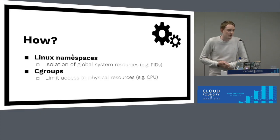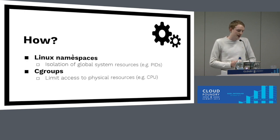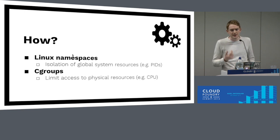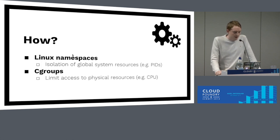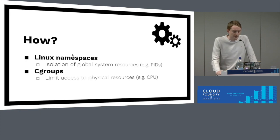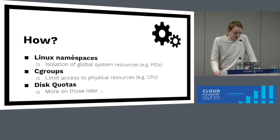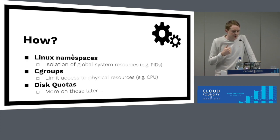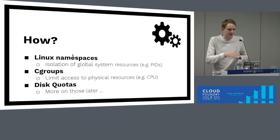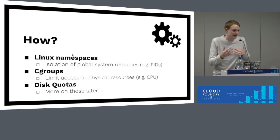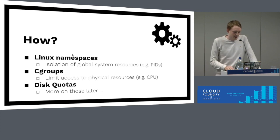We use some kernel technologies, namely Linux namespaces, which provide isolation of global system resources — things like PIDs, mount points, etc. — as well as cgroups, which provide limitation of physical resources like CPU and memory. There is a third one we especially have to think about given Cloud Foundry's multi-tenant nature: disk quotas. We need to make sure applications aren't able to just write to disk, fill it up, and provide an attack surface that way. We'll come back to that later.